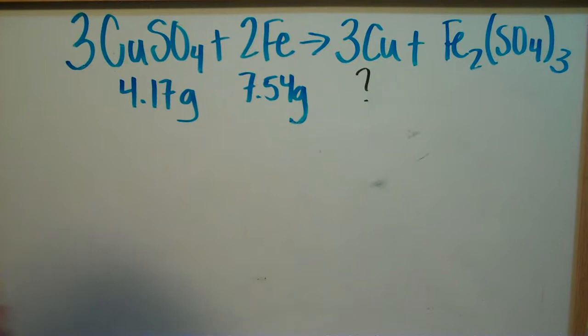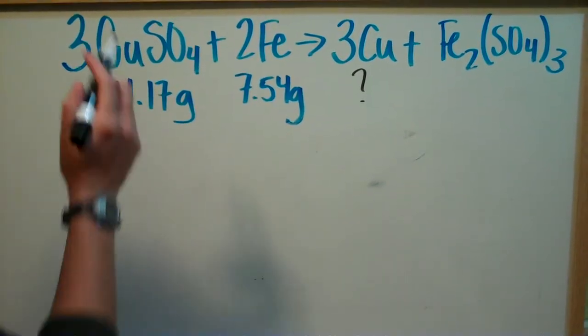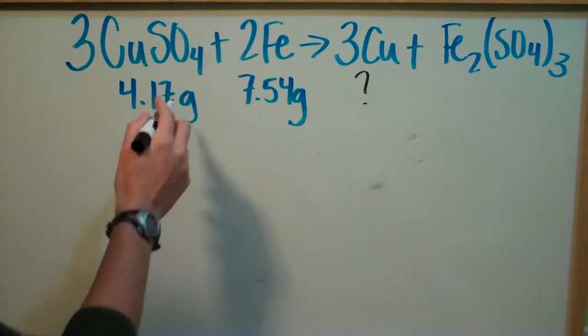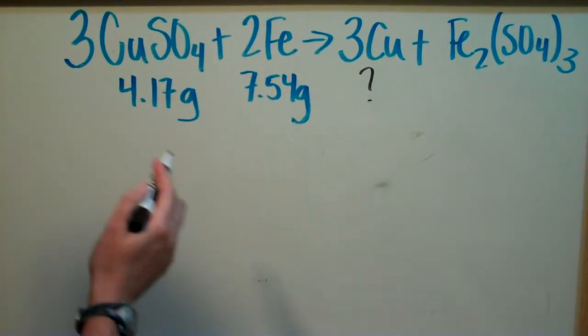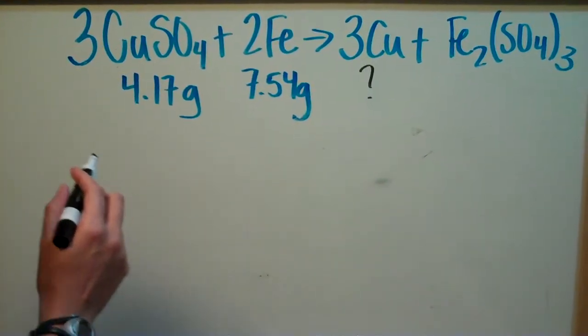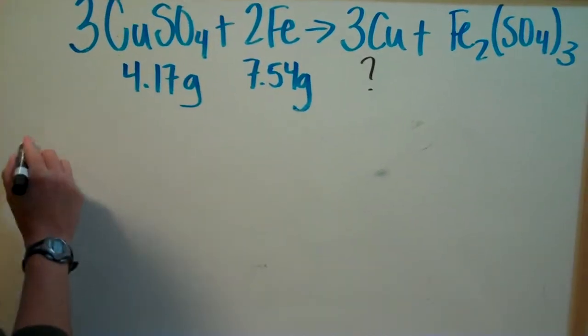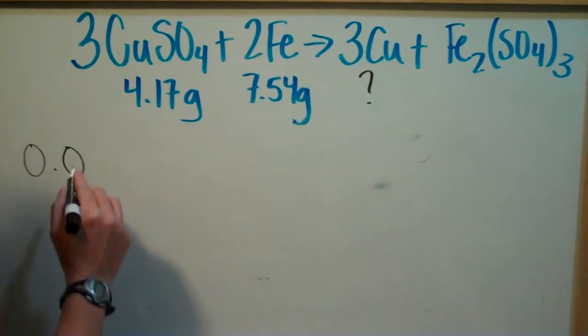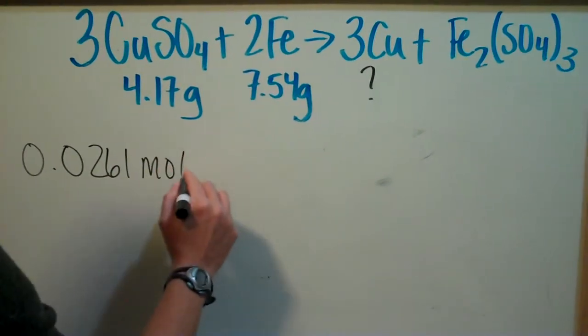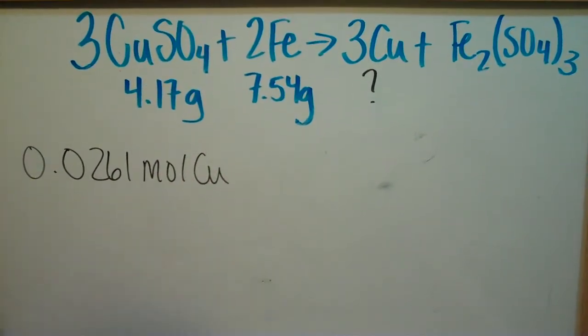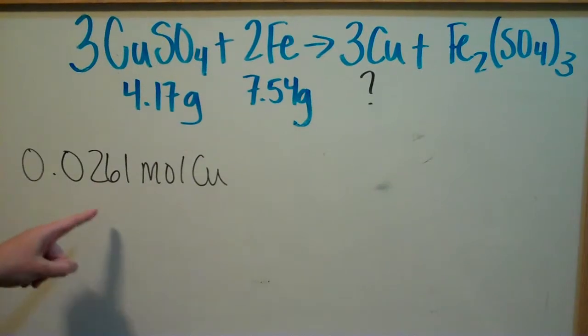In the last video, we determined that copper sulfate, in this case, is the limiting reactant. So this will not be an excess, unlike your lab. And we determined that from this reaction, 0.0261 moles of copper are going to be produced in this reaction.